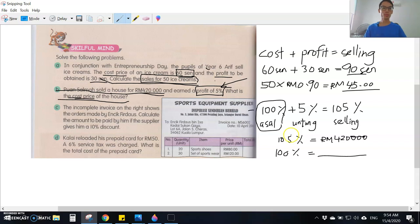This is the original price, this is the profit, so this is the selling price. If 105 percent is RM420,000, what is the cost price? The cost price is 100 percent. That's what we need to find.